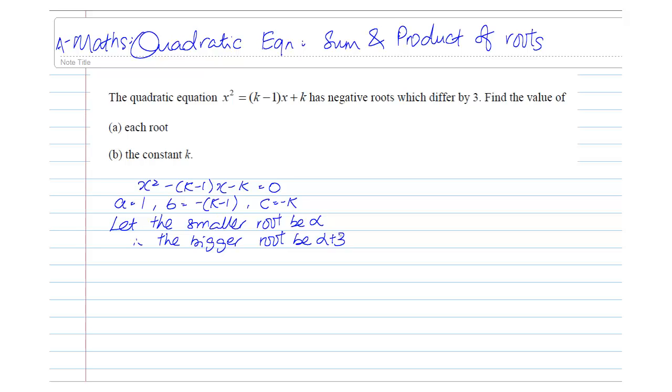One thing that I wouldn't encourage you to do is to actually introduce another unknown called beta for the second root.